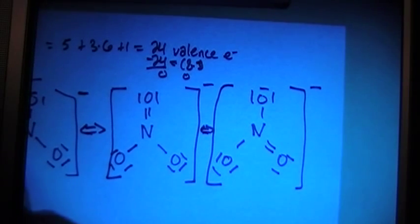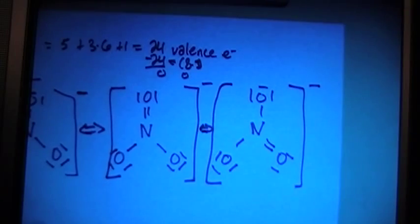So these are going to be our three resonance structures. Notice this one has the bottom left as the double bond, this is the top double bond, and this is the bottom right double bond. So that makes them all different. But each of them has the 24 electrons, and everything has their full octet. So let's go ahead and check the formal charges.